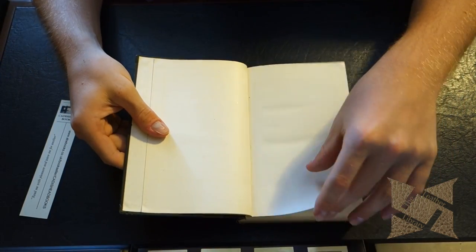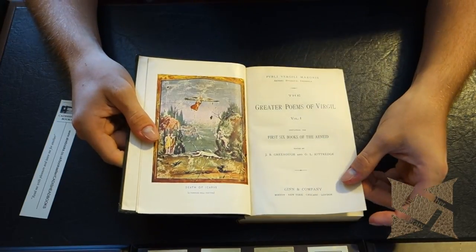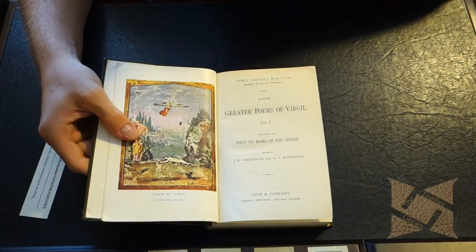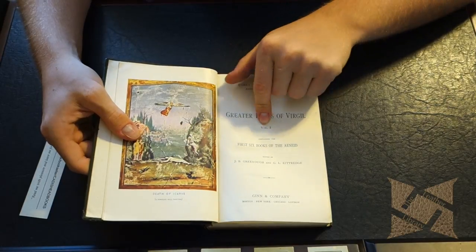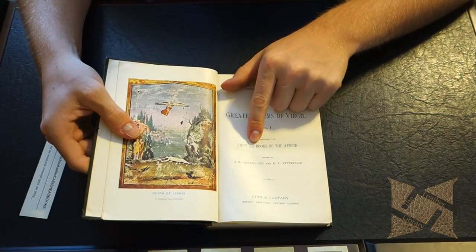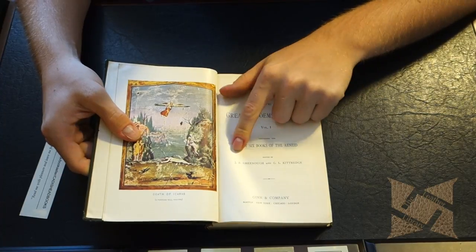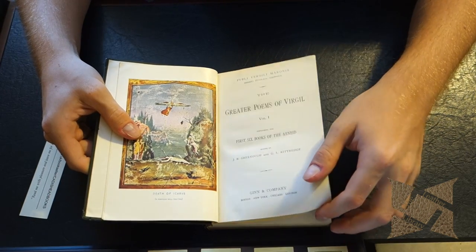So this particular volume is from, let me just try to find the date. First we'll look at this and then we'll see if we can find the date on here. So you can see Virgil, the Aeneid, the greater poems of Virgil. This is volume one, first six books of the Aeneid and you can see edited by Greeno and Kittredge, Gin and Company.